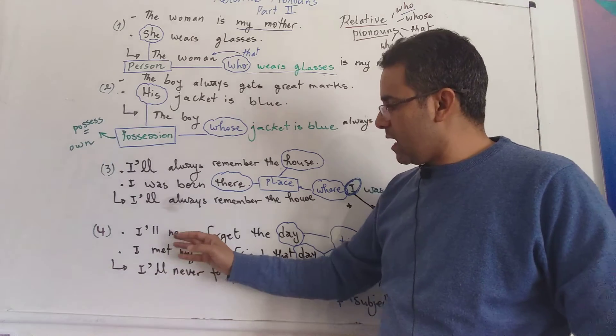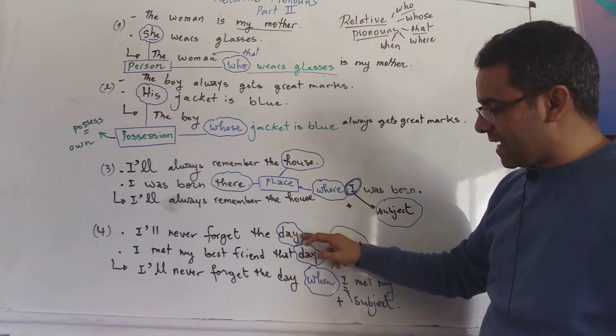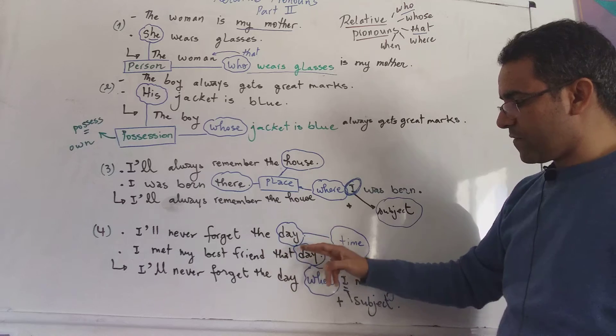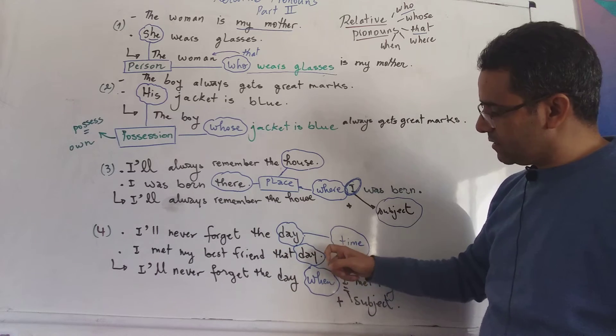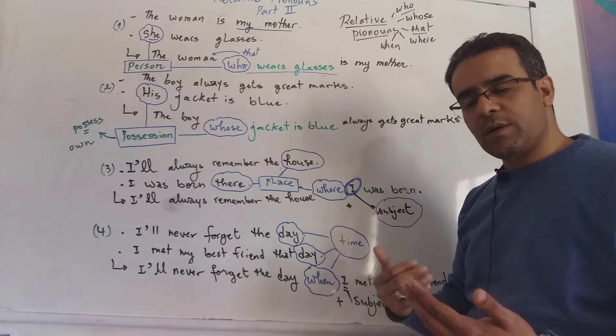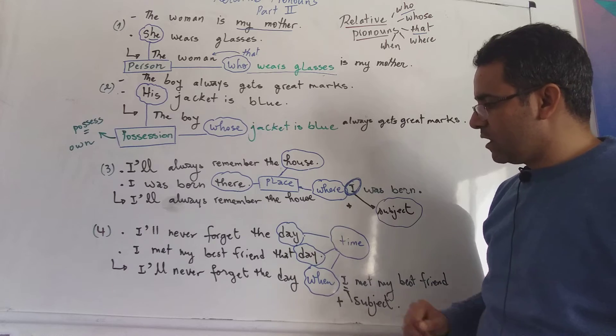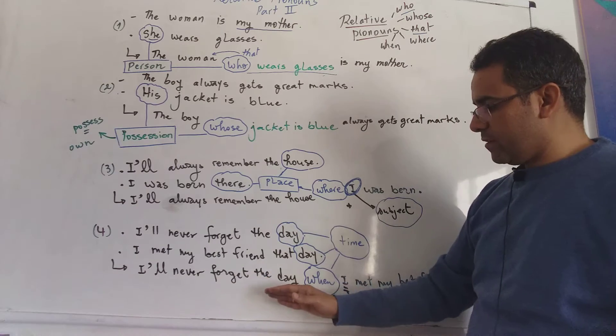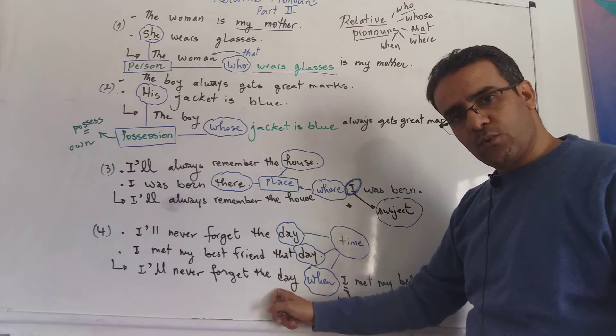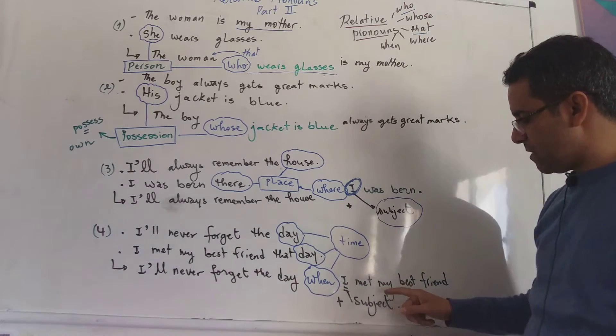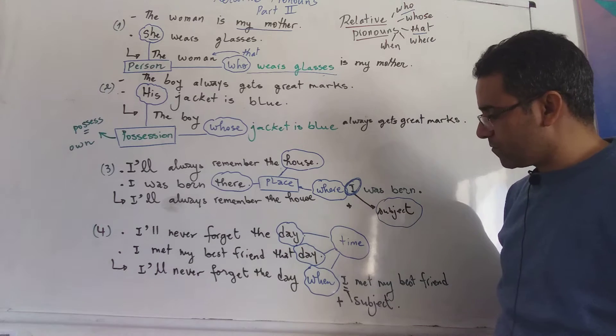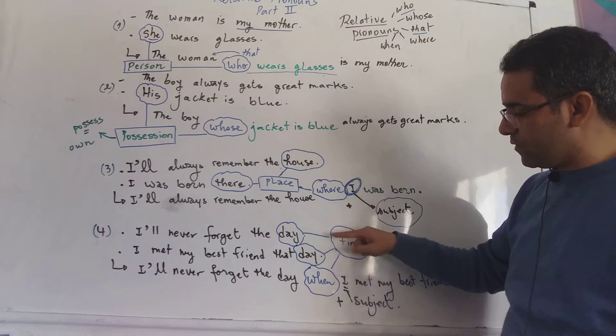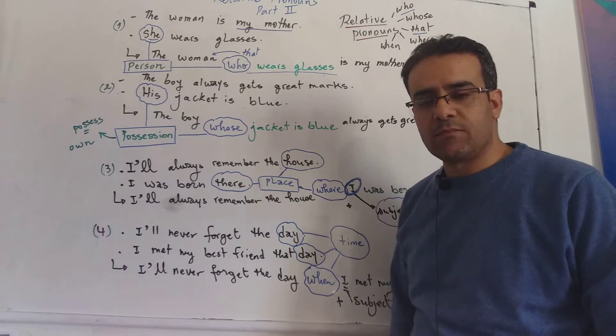Let's move on to the last example. I'll never forget the day. I met my best friend that day. Day, day, again, repetition. So to avoid that repetition, we can say, I'll never forget the day when I met my best friend. Day, day, and when, all of this we use when we have time.